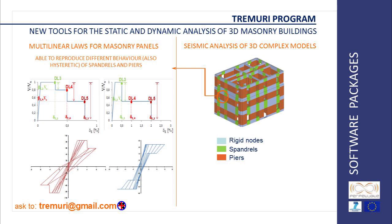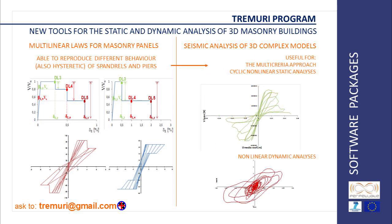In particular, within the Perpetuate project, new multilinear constitutive laws aimed to describe the response of masonry panels until very severe damage levels and to simulate different aesthetic responses have been formulated and implemented in the program. They represent a powerful tool to perform both static — monotonic and cyclic — and dynamic nonlinear analysis. Moreover, the new release of Tremory is essential for investigating the seismic response until severe damage levels and for applying the multi-criteria approach for a proper definition of performance levels.